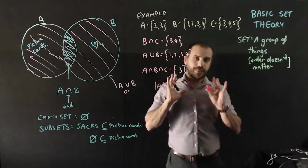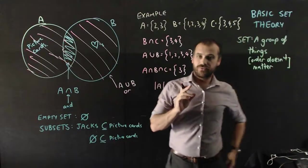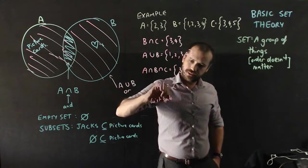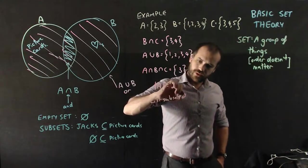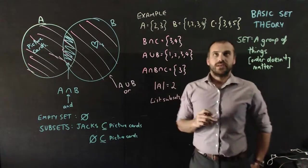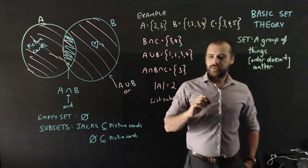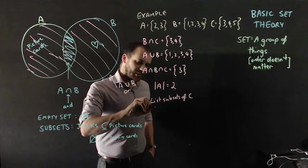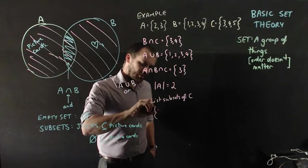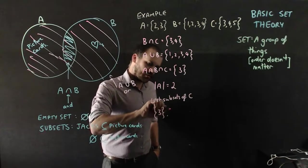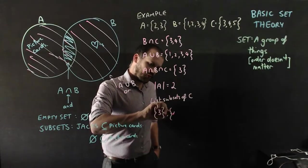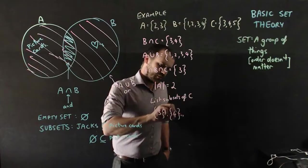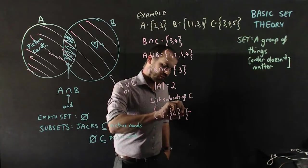Finally, last one. Let's look at the subsets of C. List subsets of C. So all of the subsets of C. It's going to take a little while, but let's do it. It's going to be {3}, there's going to be {4}. These are all the one element sets. {5}.